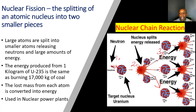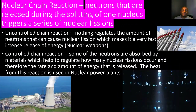This chain reaction goes on and on, which is why it's called a nuclear chain reaction — it releases great amounts of energy that continues to build. A nuclear chain reaction occurs when neutrons released during the splitting of one nucleus trigger a series of nuclear fissions. We have two types: the first and most dangerous is an uncontrolled chain reaction, where nothing regulates the amount of neutrons that can cause nuclear fission, making it a very fast, intense release of energy.